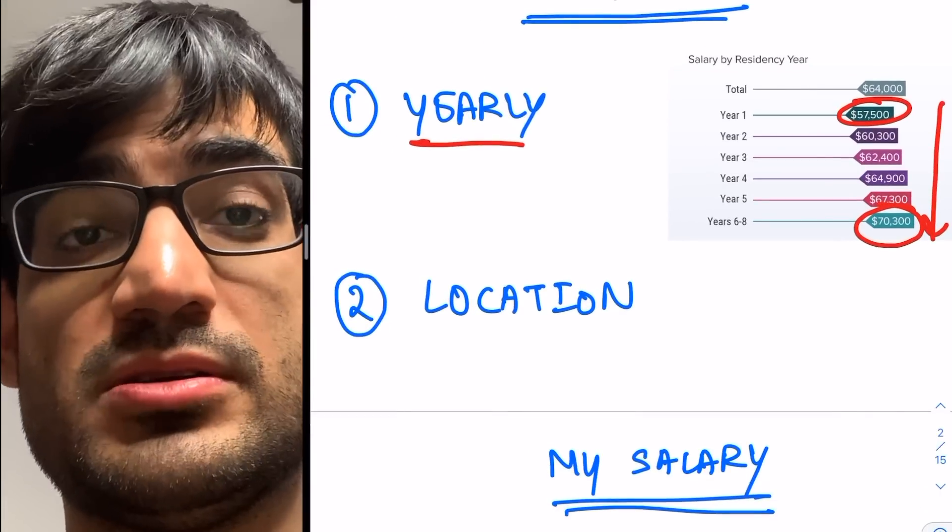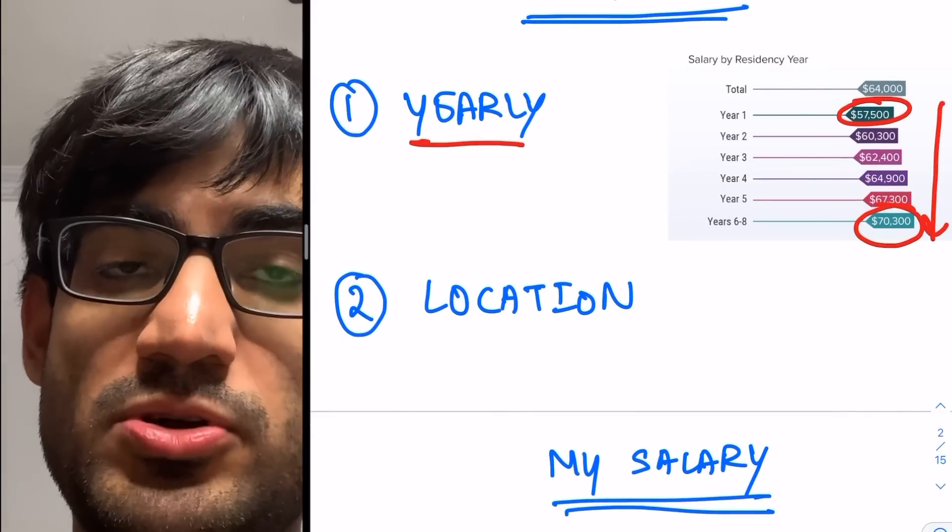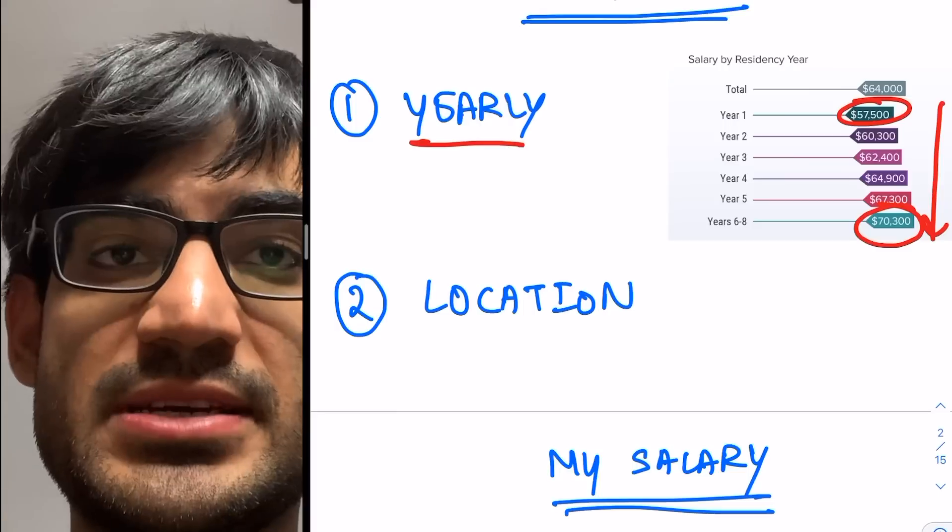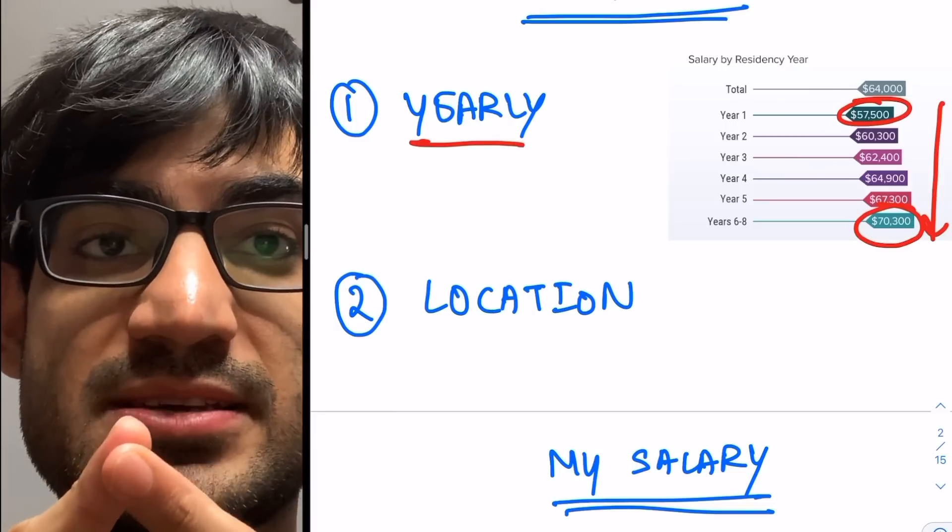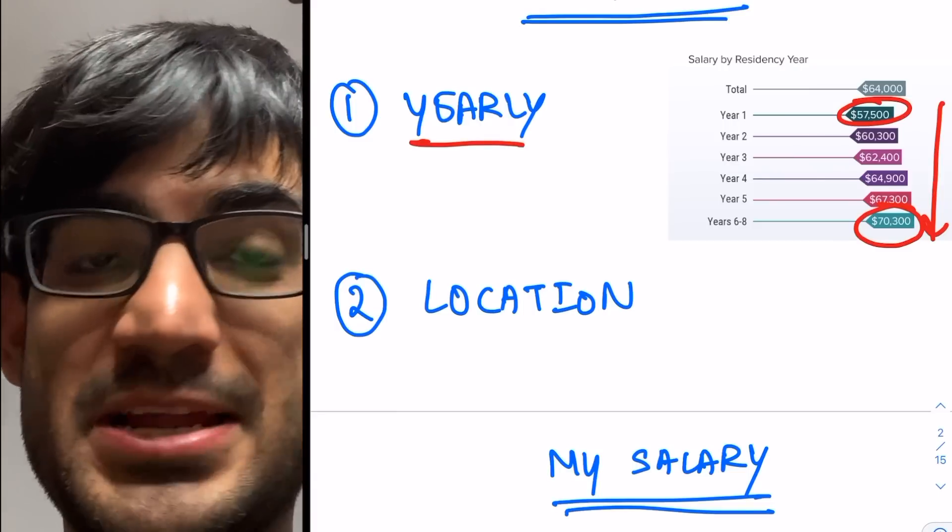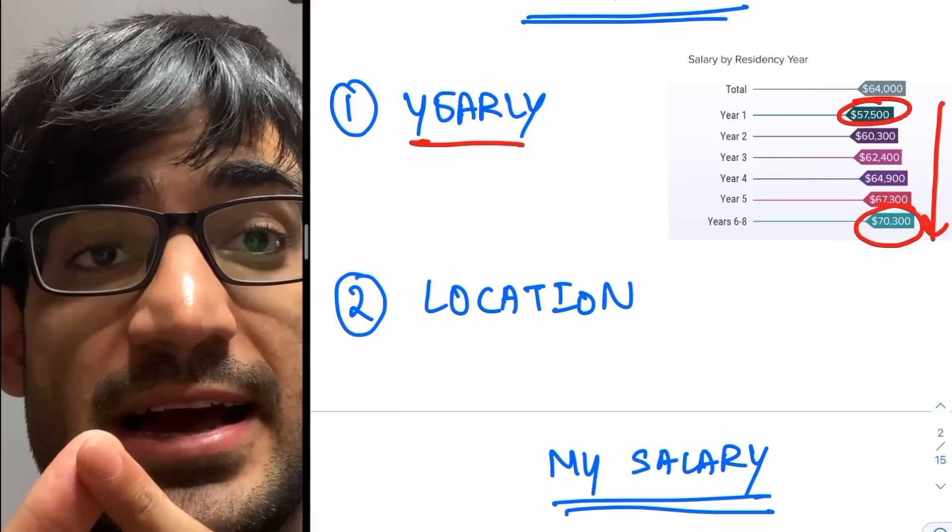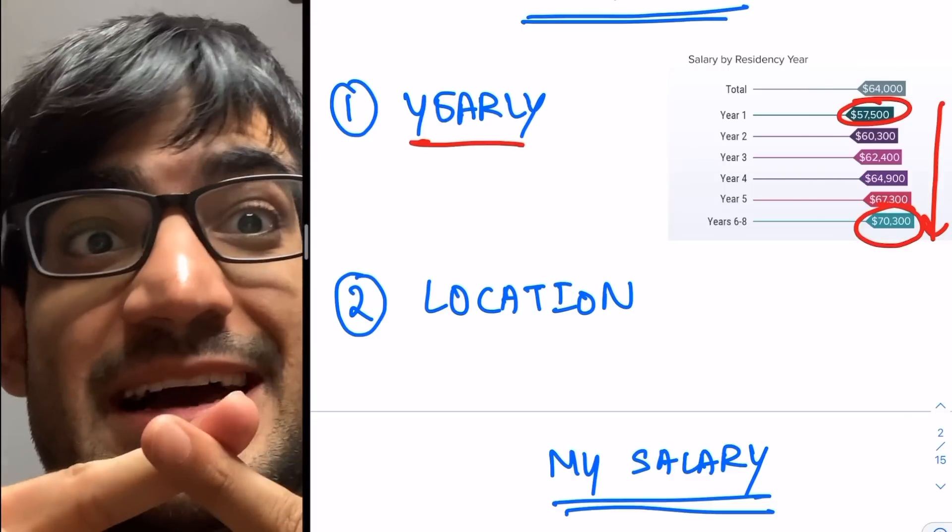Secondly, location variation. So what happens is, let's talk about New York City. New York City is extremely expensive. They have multiple taxes, so there's the federal tax, the state tax, and then the city tax for New York City.